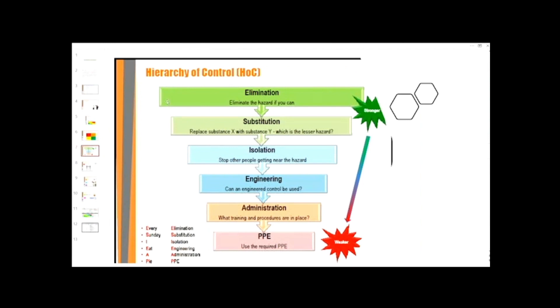This is the hierarchy of controls. We have three levels. Level one is elimination of the hazard, this is the strongest level. Level two: substitution, isolation, and engineering. And level three: administration and PPE, this is the weakest level. Somebody has come up with this saying to remember these by: Every Sunday I Eat A Pie.